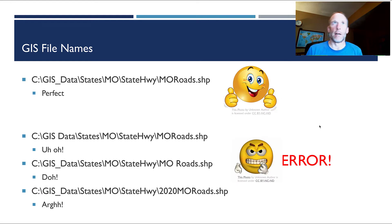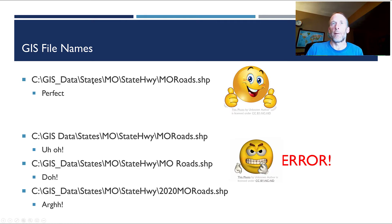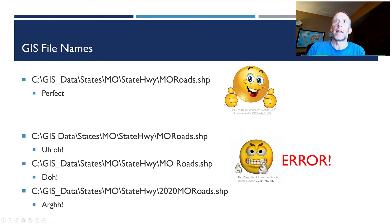So let's go over some examples. Here we have a full path name: C colon slash GIS data, then a folder called states, a folder inside there called Missouri, state highway, and then a file called moroads.shp. This is perfect. No spaces — we've got an underscore here, and here we just squish two words together to get rid of the space. No leading numbers, no spaces, no weird characters.